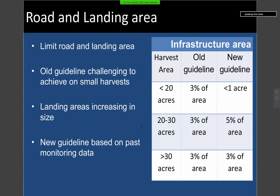Infrastructure: we're largely talking about road and landing area. These are high-impact areas — heavy machinery and trucks can cause compaction whether soils are dry, wet, or frozen. Monitoring over the years shows these high-impact areas persist on the landscape regardless of the season. We generally recommend that the amount of road and landing area be limited to the absolute smallest amount possible within a harvest site to conduct operations efficiently. Our old guideline said three percent of the harvest area — total road and landing area should be three percent or less of the general harvest area.